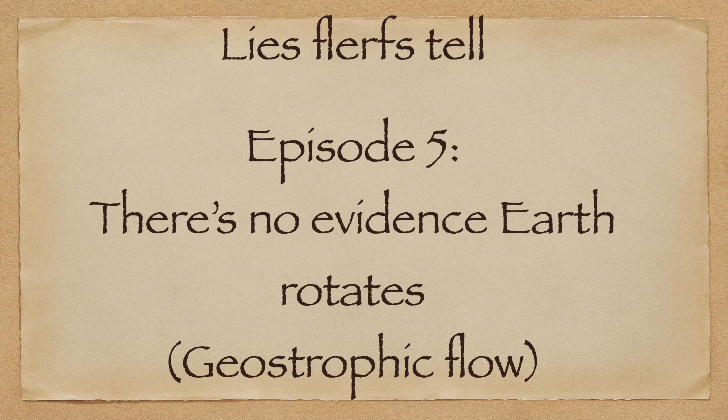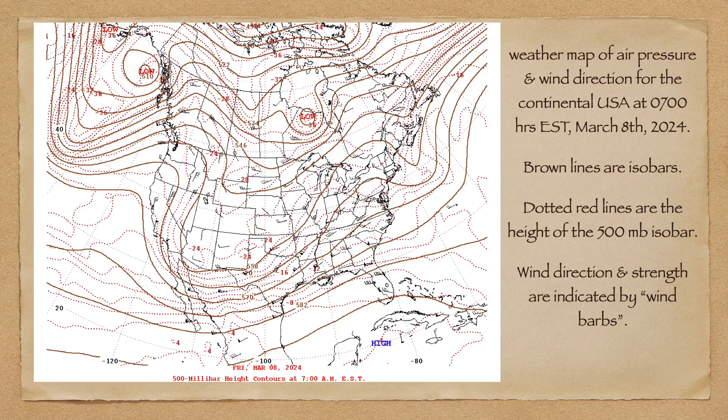You may more commonly recognize this as wind. Here we see a standard weather map for the continental United States at 7 a.m. on the 8th of March 2024. Isobars — that is, lines of equal pressure — are shown as solid brown lines. The altitude of the 500 millibar level is shown as dashed red lines, and the wind directions are shown using wind barbs.